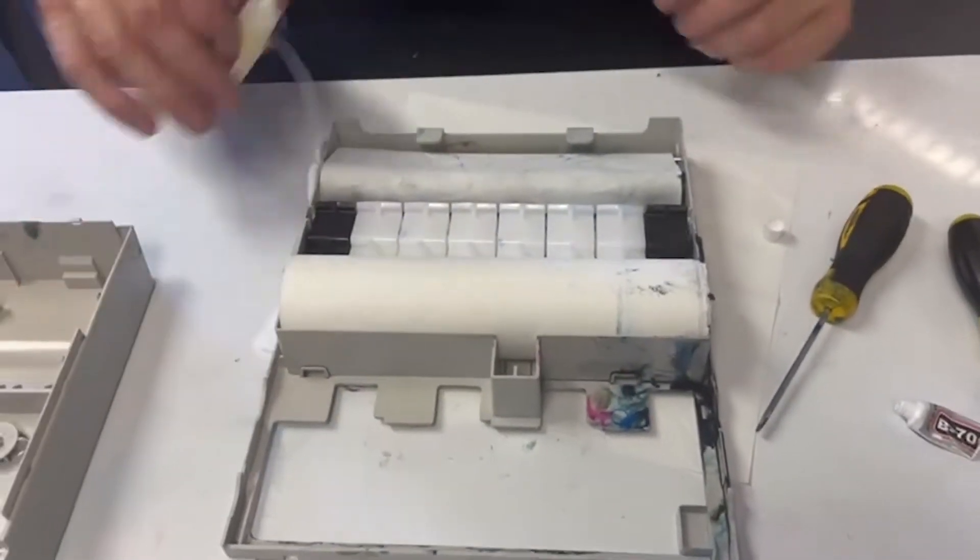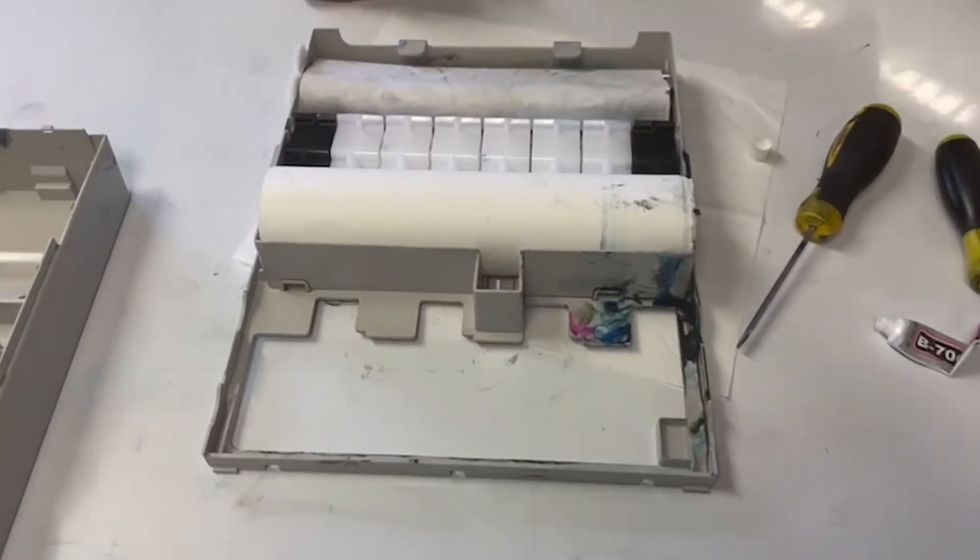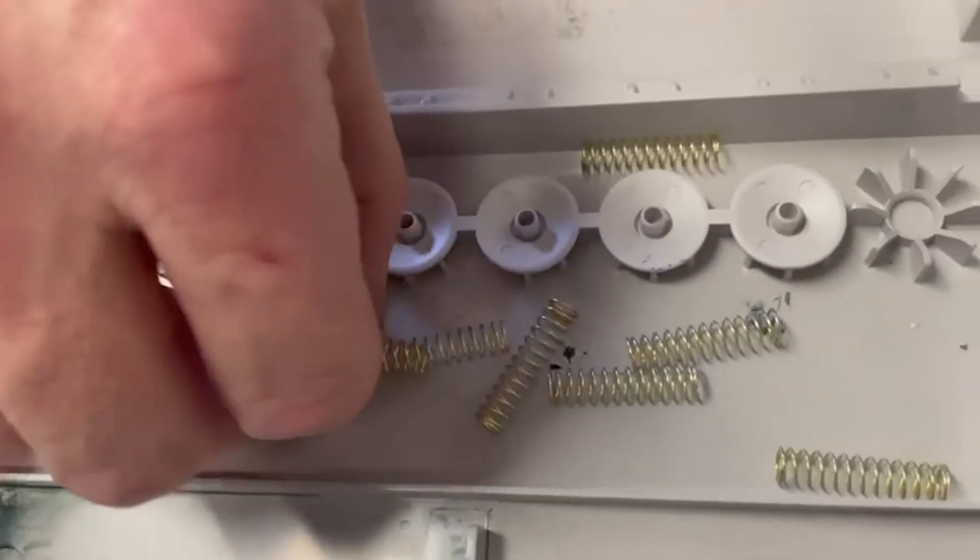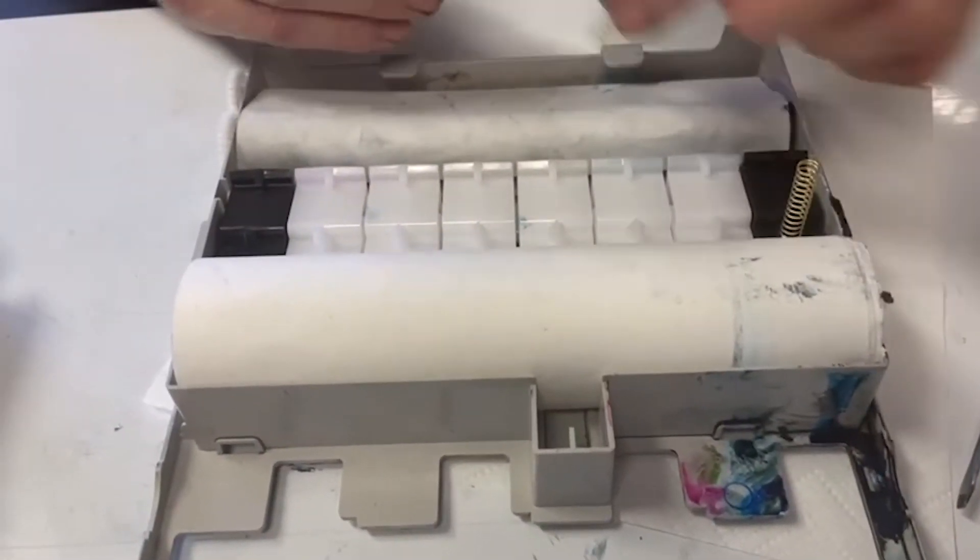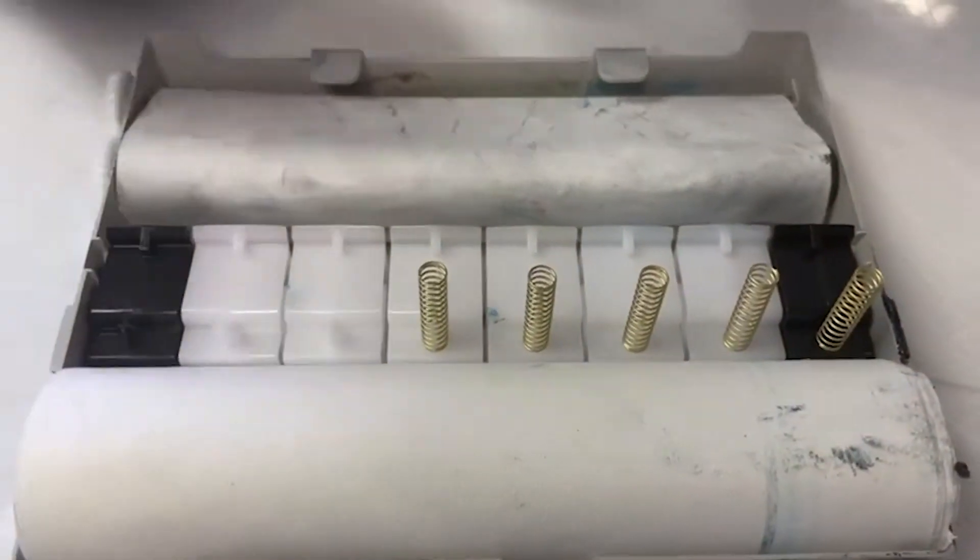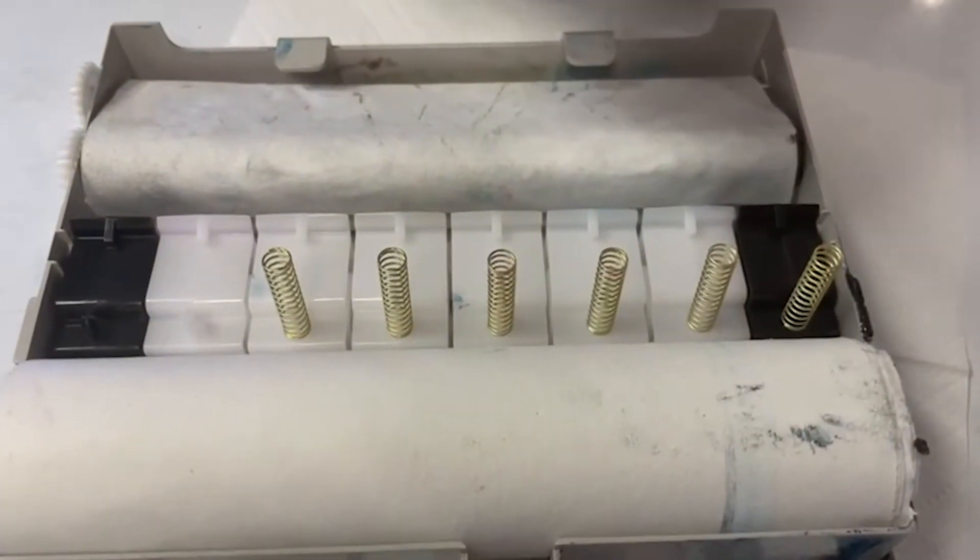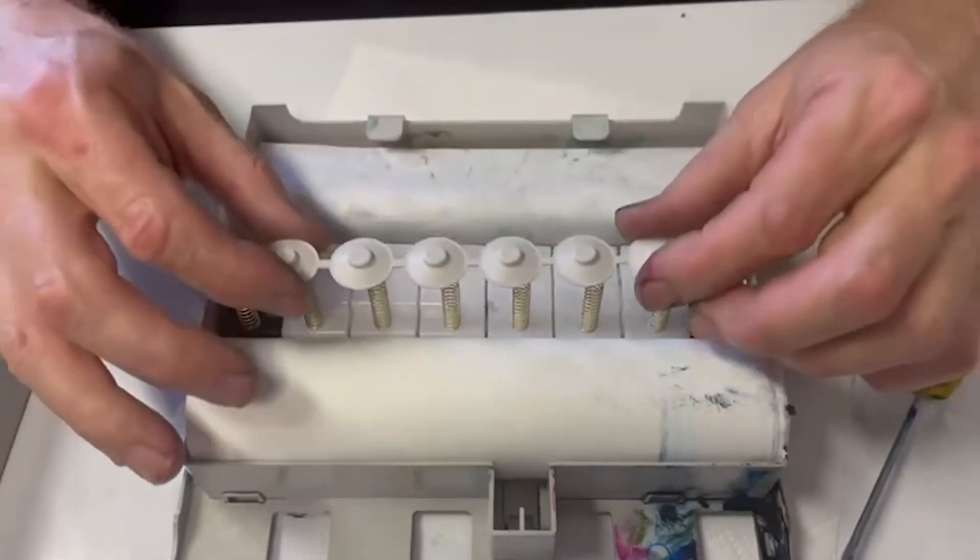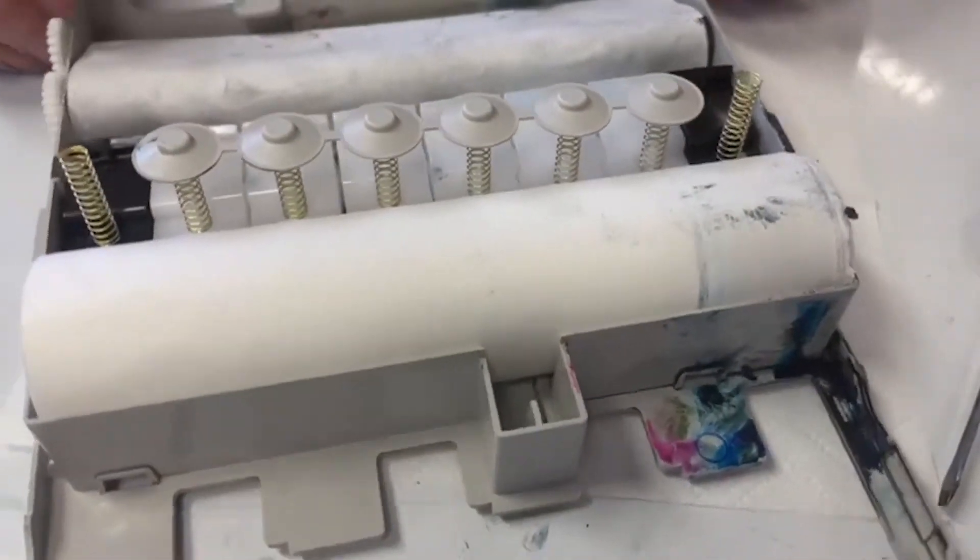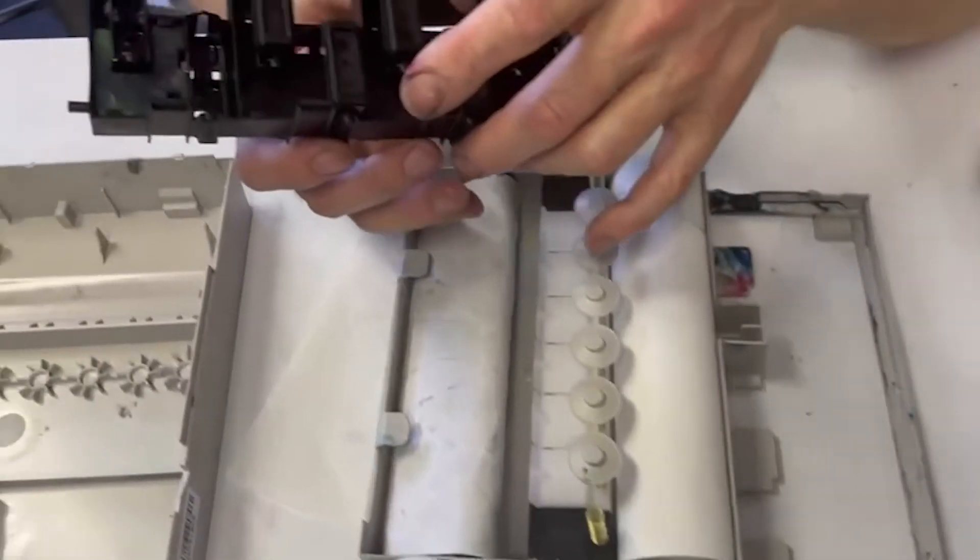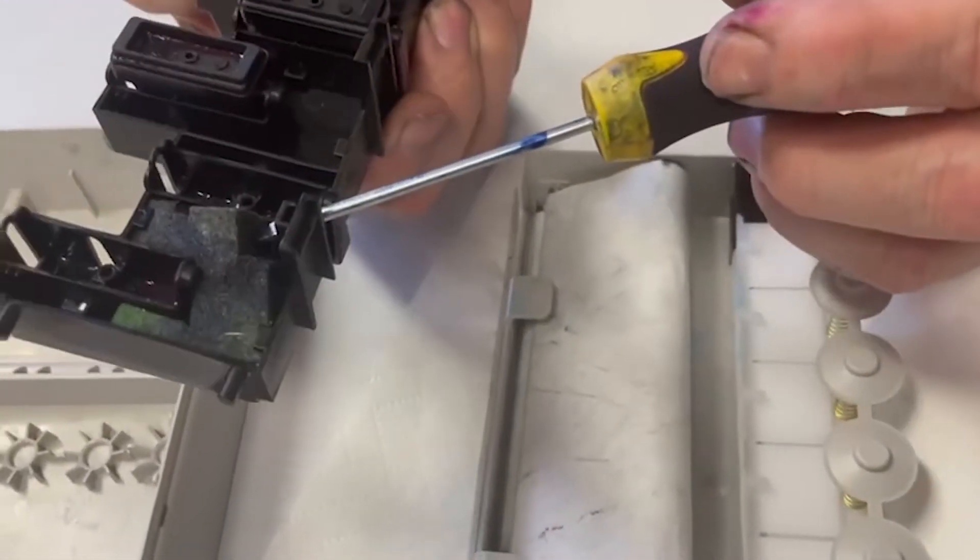Finally, we need to put the whole thing back together again, which we need our springs here, which we put here: one, two, three, four, five, eight. Then we need a little capping station, just on top. This thing, the capping station, has a bit of felt in it which we discard. Put it down there. You can wash this out, but it's not that critical.